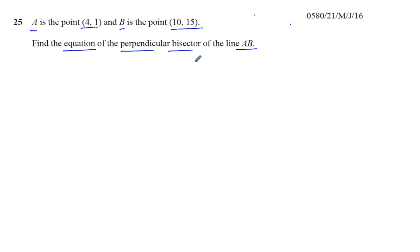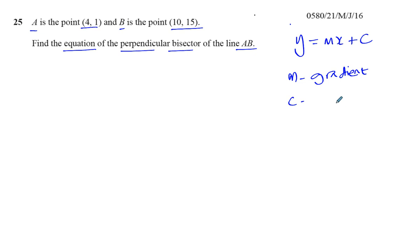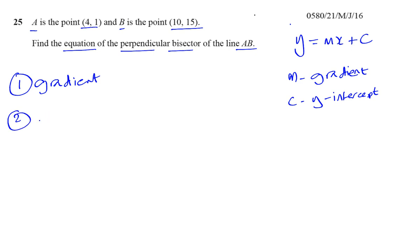We've got to find the equation of a straight line — a perpendicular bisector is a straight line. The equation of a straight line has the form y equals mx plus c. We need to find m, which is the gradient, and c, which is the y-intercept. To find c, we need any point on the line. As long as we have the gradient and any point on the line, we can find the equation of that line.